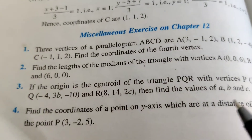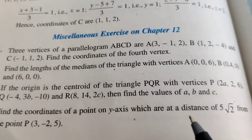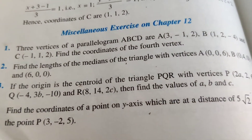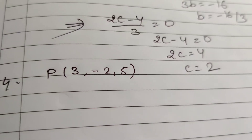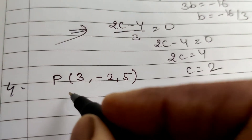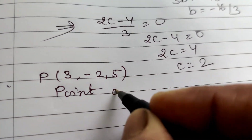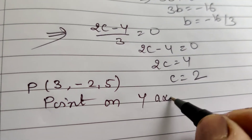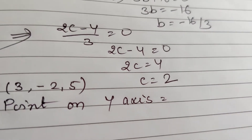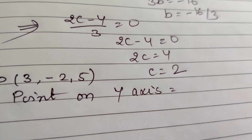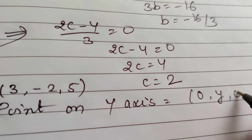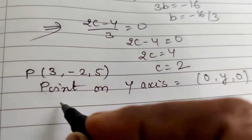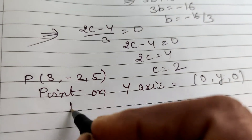Question number 4: Find the coordinates of a point on the y-axis which is at a distance of 5√2 from the point (3, -2, 5). Any point on the y-axis has coordinates (0, y, 0). Using the distance formula: √((0-3)² + (y+2)² + (0-5)²) = 5√2.